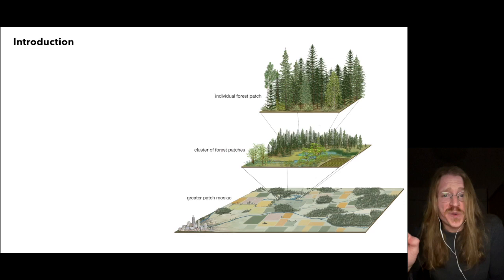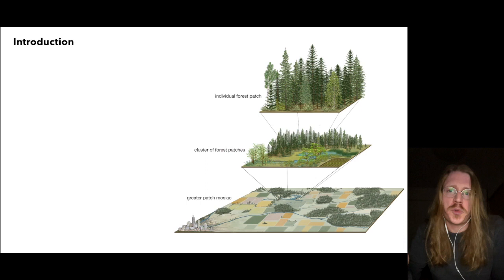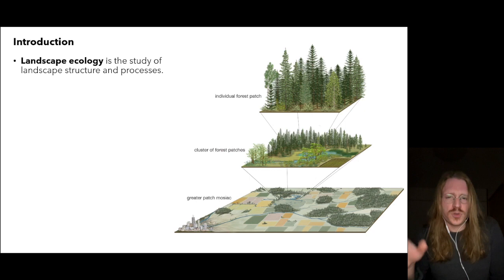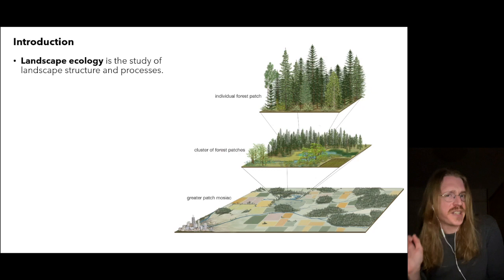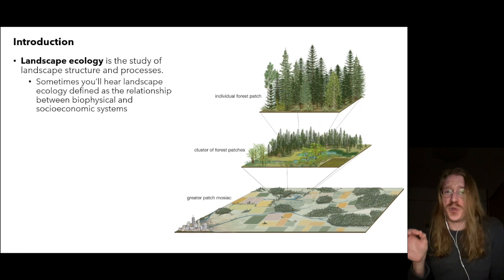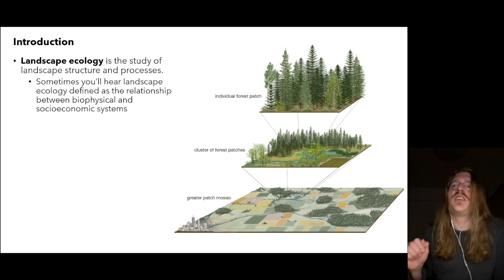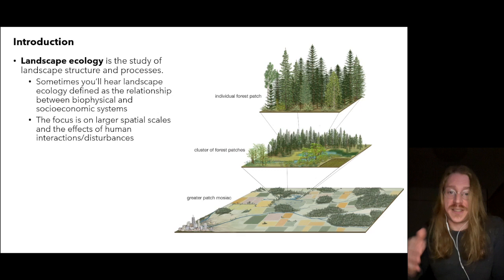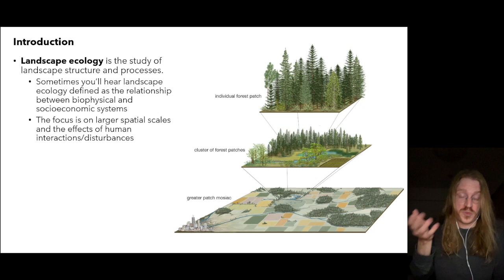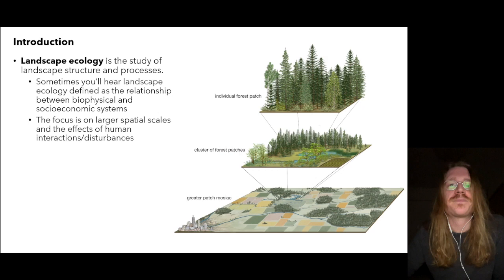We're focusing on the structure and processes that emerge at the landscape level — a level of spatially interconnected systems. Sometimes you might hear a different definition: that landscape ecology is the relationship between biophysical and socioeconomic systems. This treats human influence as an unavoidable emergent property at the landscape level, where the focus is on human interactions and disturbances — a complementary viewpoint applicable to conservation biology.